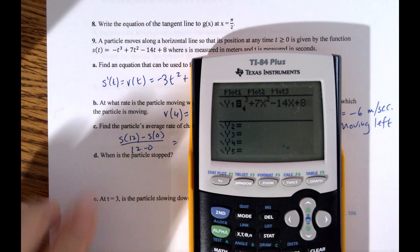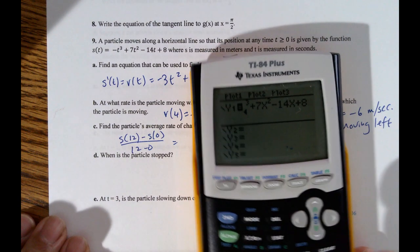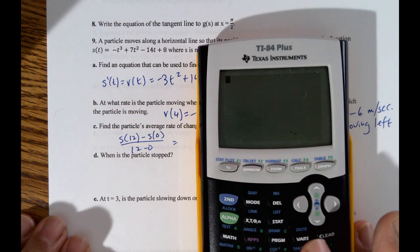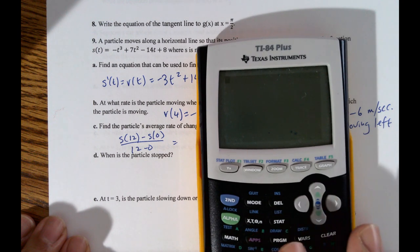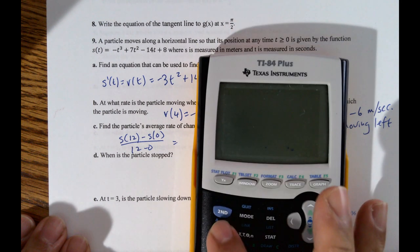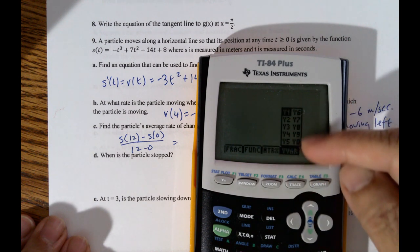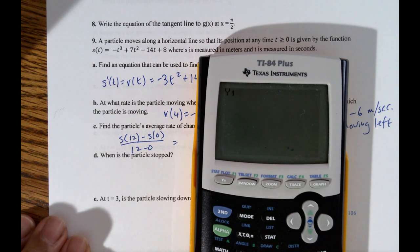So why am I showing you all this? Because this is a reminder of how to use the calculator. Some people don't know this is available. So I put it in y1. So now I'm going to use alpha trace. So you have all these choices of y1 through y10. Press y1.